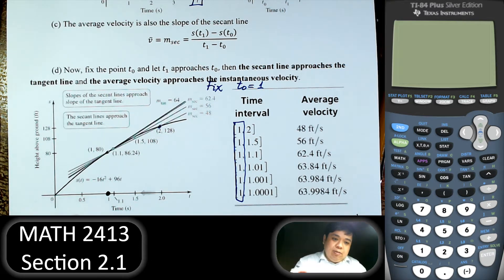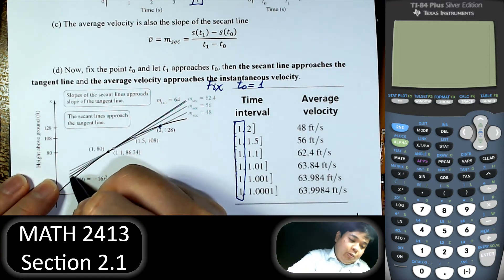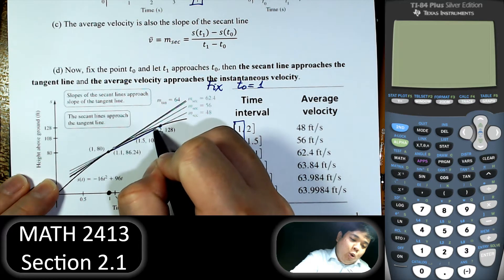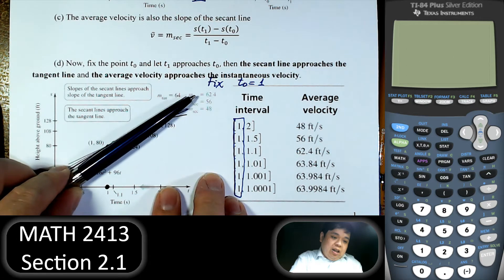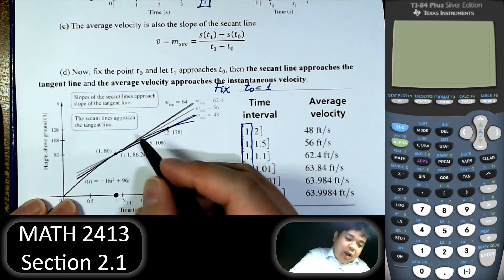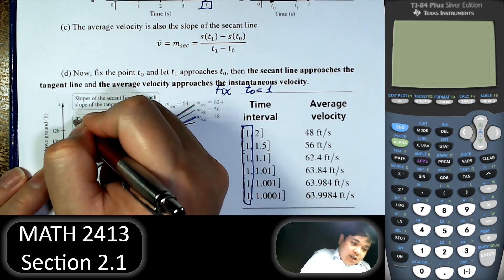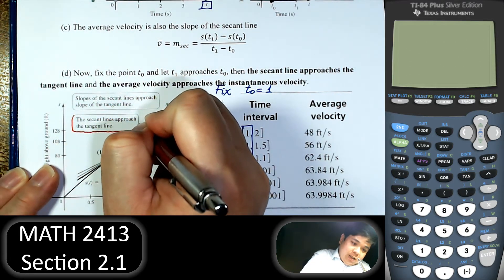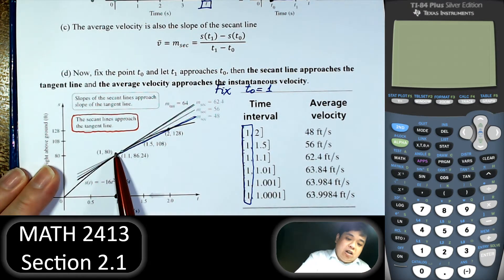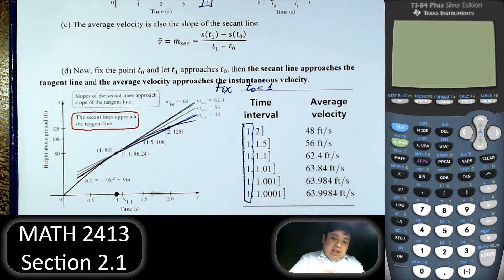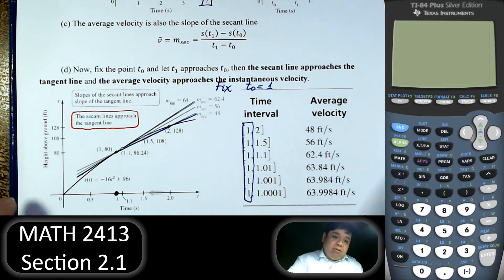Now on the graph, originally we start with the slope. Go to the point t equal to 1, t equal to 2. And then as the points get closer together, essentially the secant line becomes the tangent line. So if we have t1 approaching t0, when t1 equals 1, then we have the slope of the tangent line.